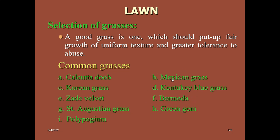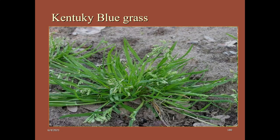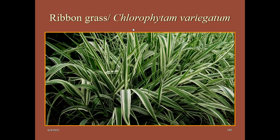Mexican grass is mainly used in the Indian subcontinent. Calcutta dew grass, also called harali grass or Cynodon dactylon — remember the vernacular names and scientific name, as multiple choice questions may give either. This grass is mainly used in the Indian subcontinent and in cricket stadiums, mainly in warmer regions. Ribbon grass, Chlorophytum virgatum, is not much used in India.